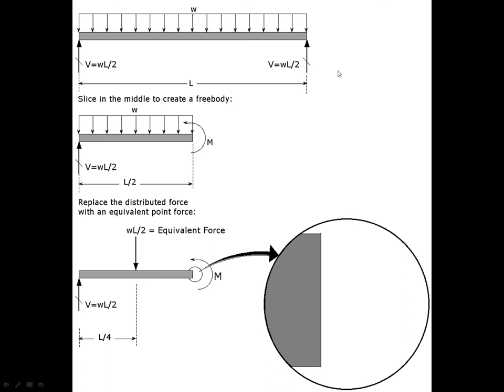We have a support shown at each end. By the symmetry of the problem, we know that each of these supports has to be providing a force equal to half of the total downward load. So if the total downward load is W times L, then the upward reaction, which we call V, is equal to WL over 2 at each end.